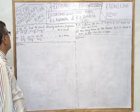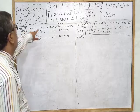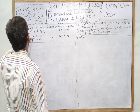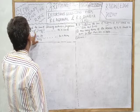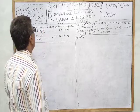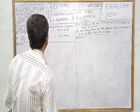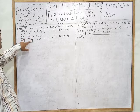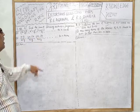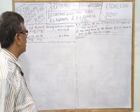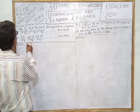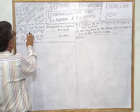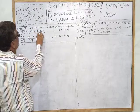Question number one: find the sum of the following arithmetic progression. The terms are: (x-y)², x²+y², and (x+y)² up to n terms. The second part asks: x-y/x+y, 3x-2y/x+y, 5x-3y/x+y up to n terms. For question one, the first term is (x-y)², the second term is x²+y², and the third term is (x+y)².